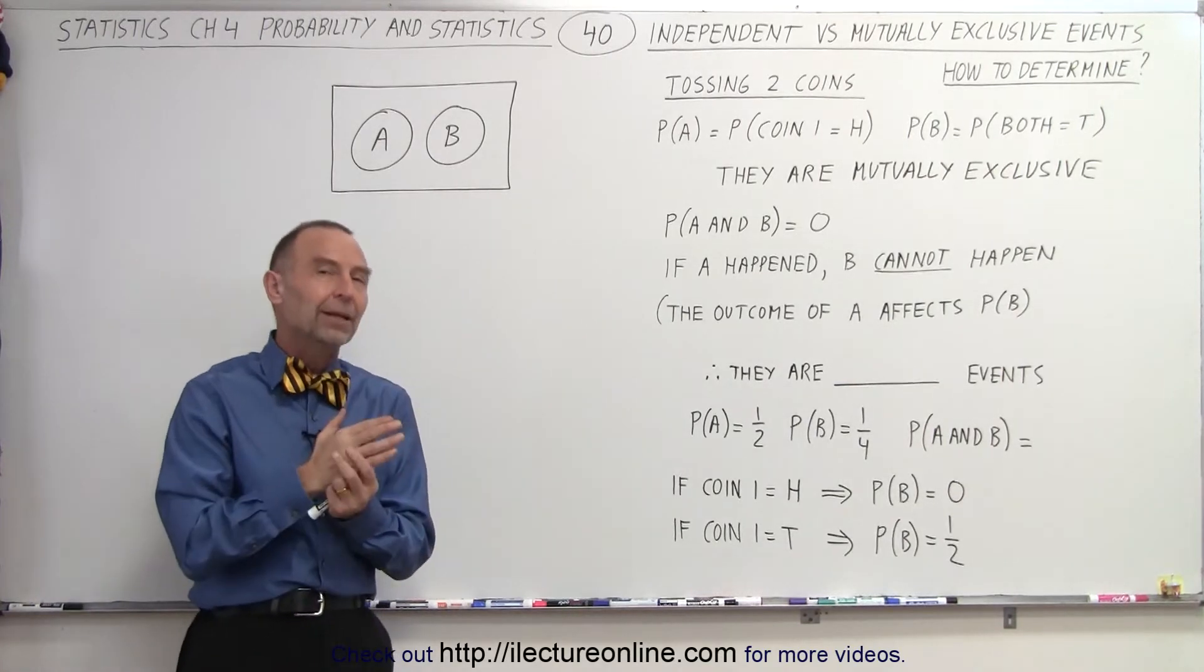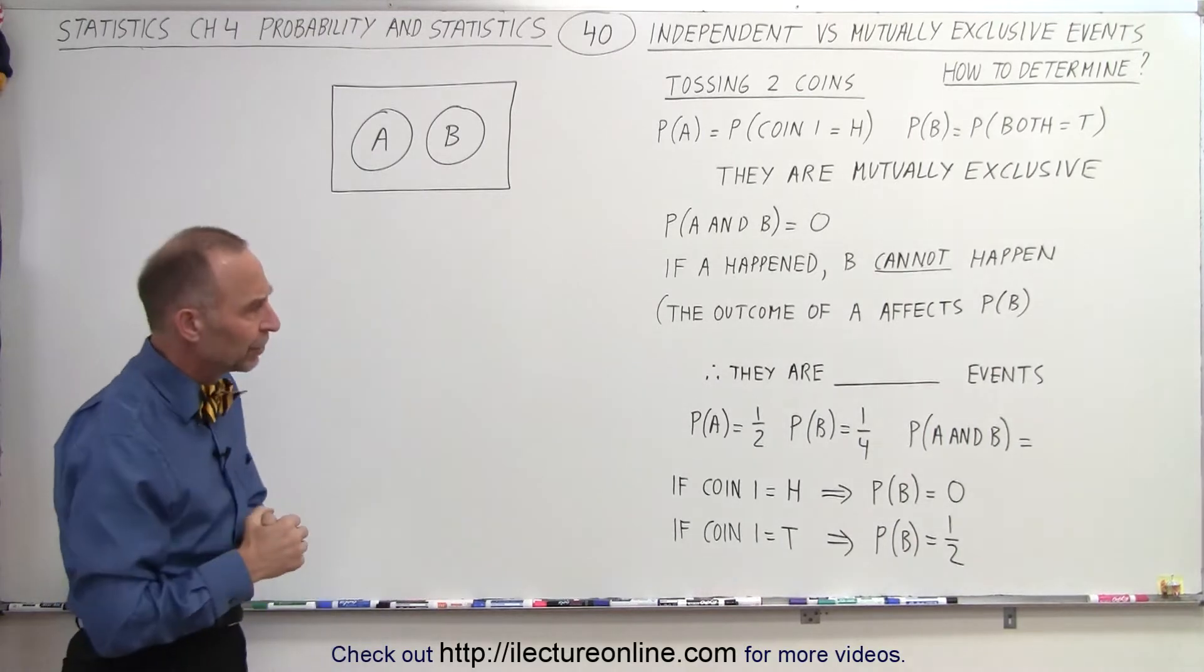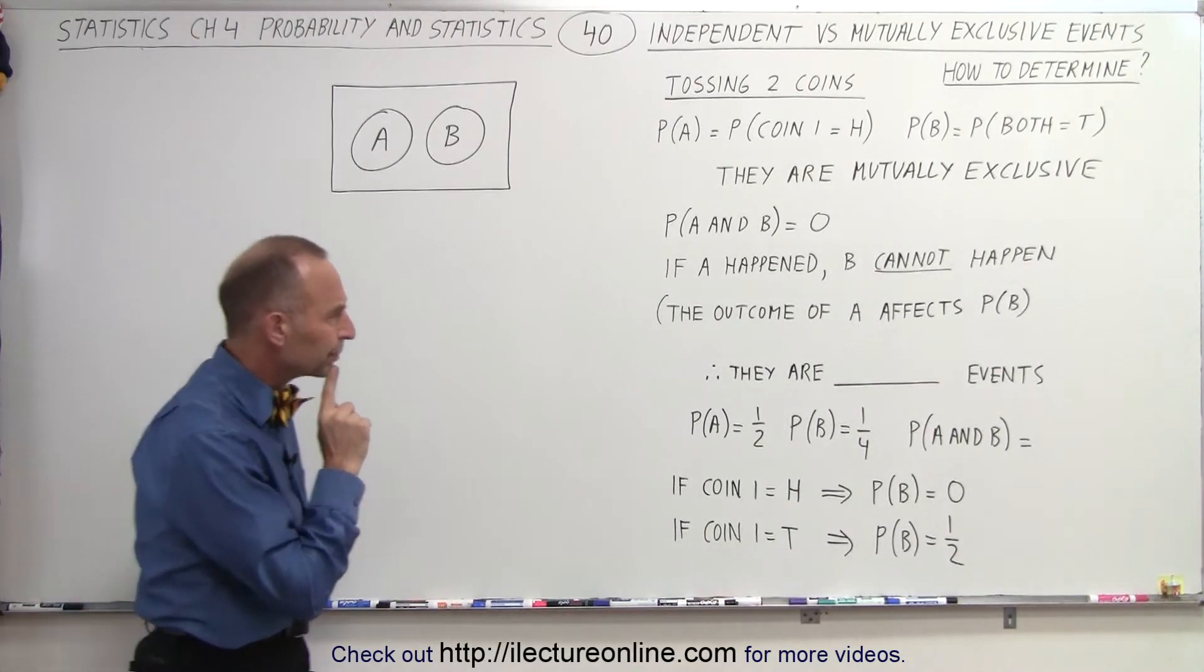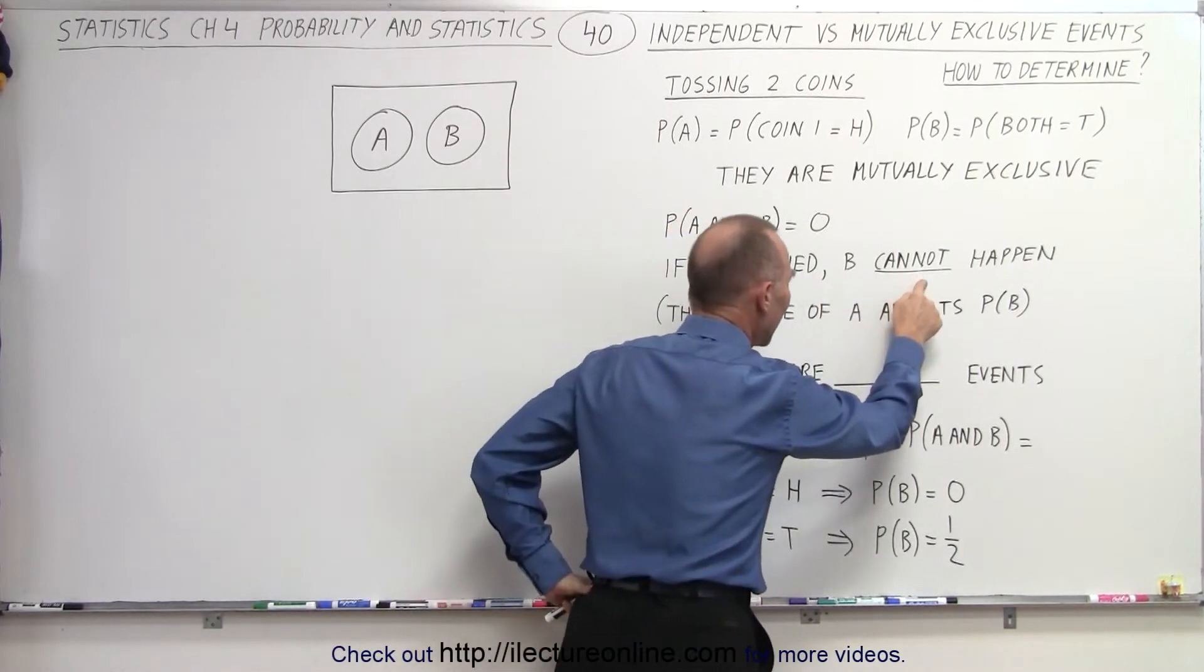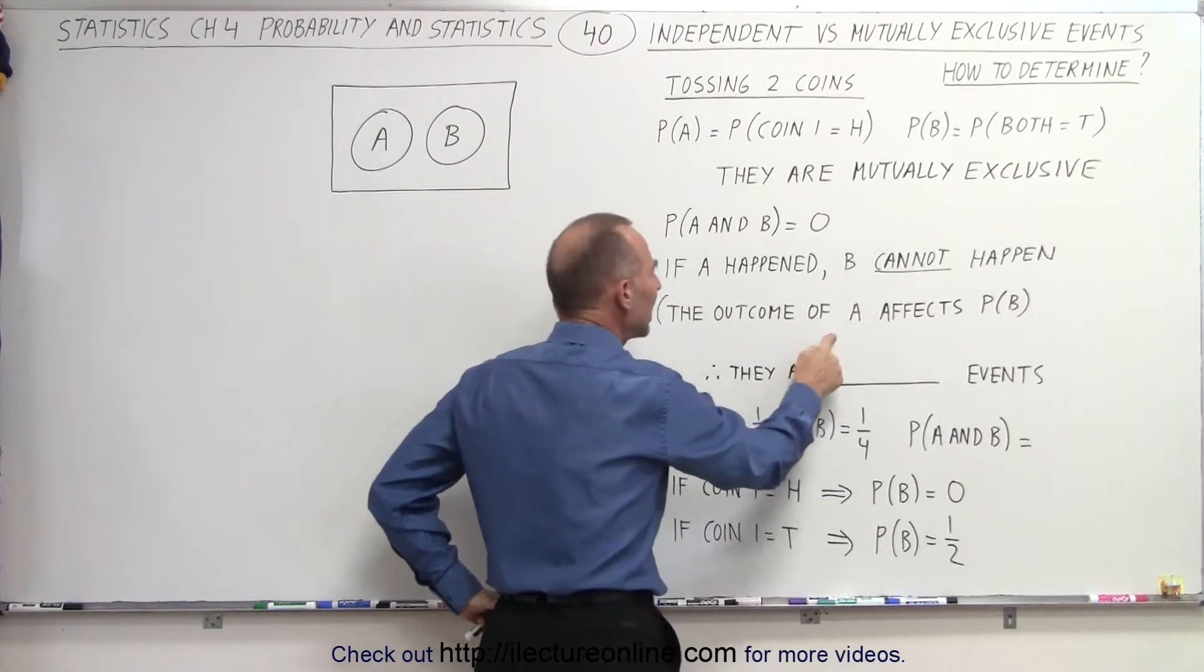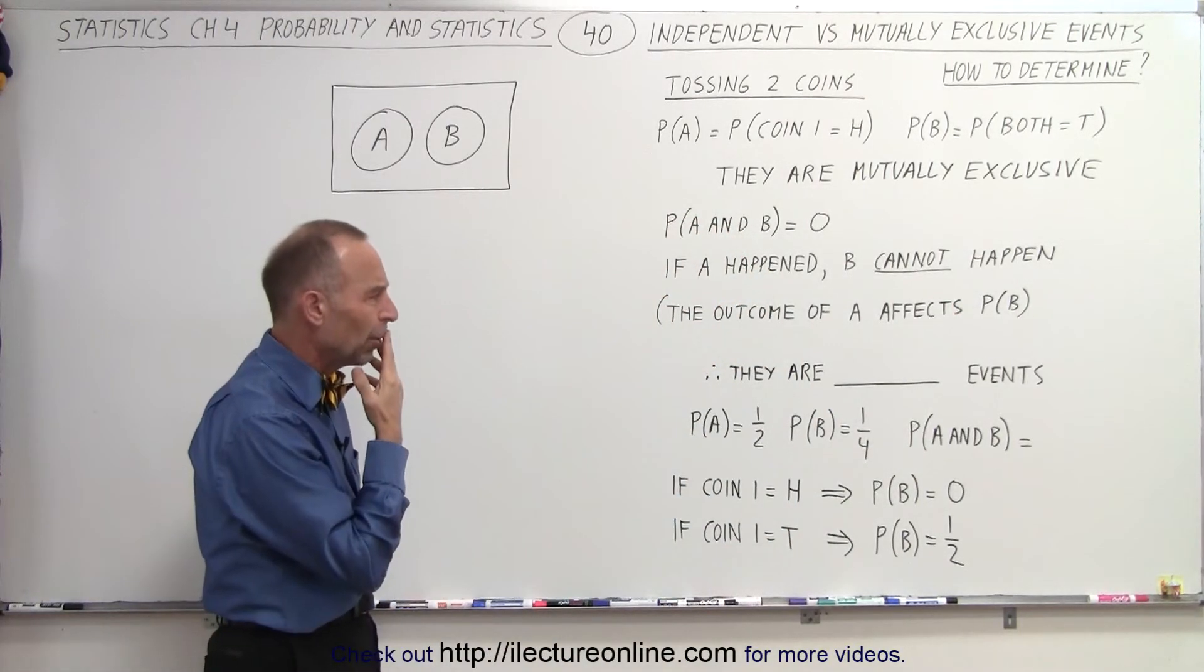Well, if two events are dependent, that means the outcome of one will affect the outcome of the other. Let's see if that's the case. So, if A happened, B cannot happen. The outcome of A affects the probability of B.